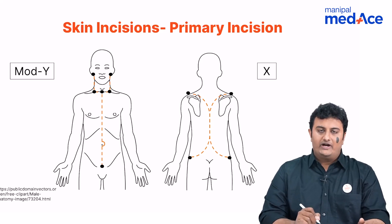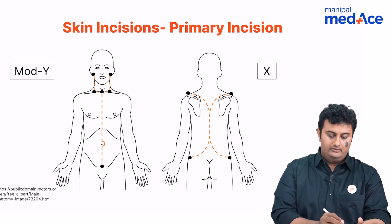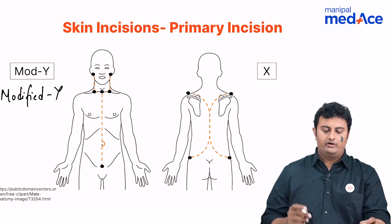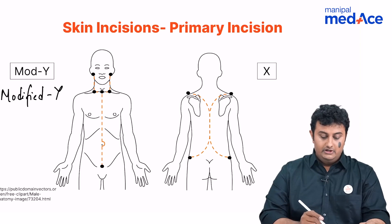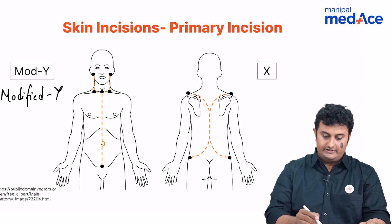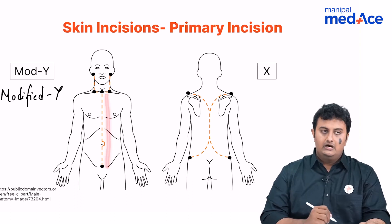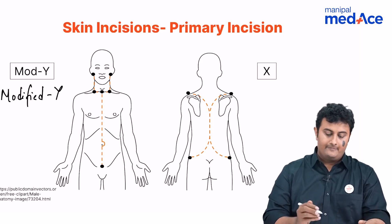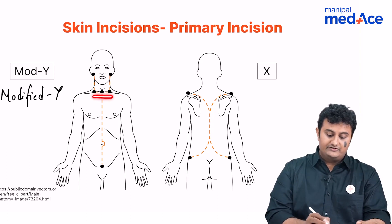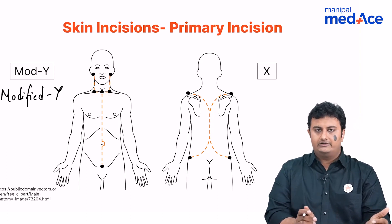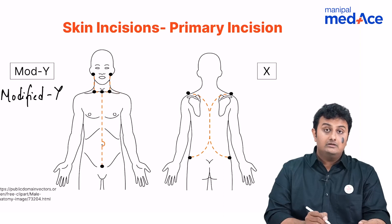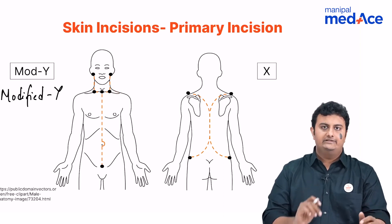Another form of Y-shaped incision is known as the modified Y. The reason it is called modified Y is because you place an incision extending from the suprasternal notch all the way down to the symphysis pubis, avoiding the umbilicus again. The umbilicus is avoided at every single midline incision. Then you place another incision across the interclavicular line up to the midclavicular point, which is then extended upwards towards the mastoid on either side of the neck.